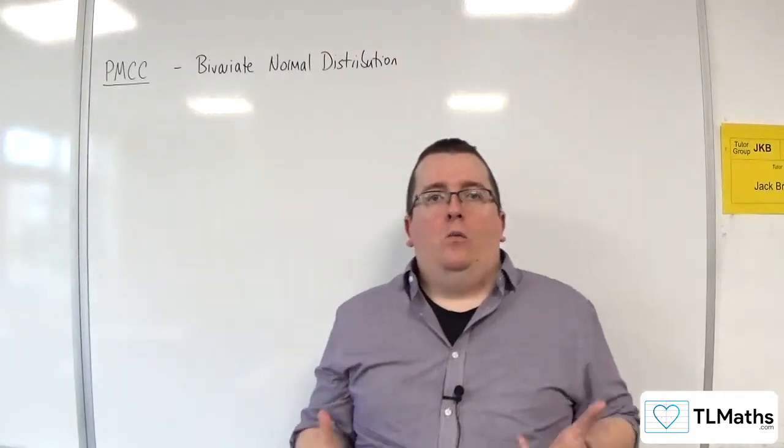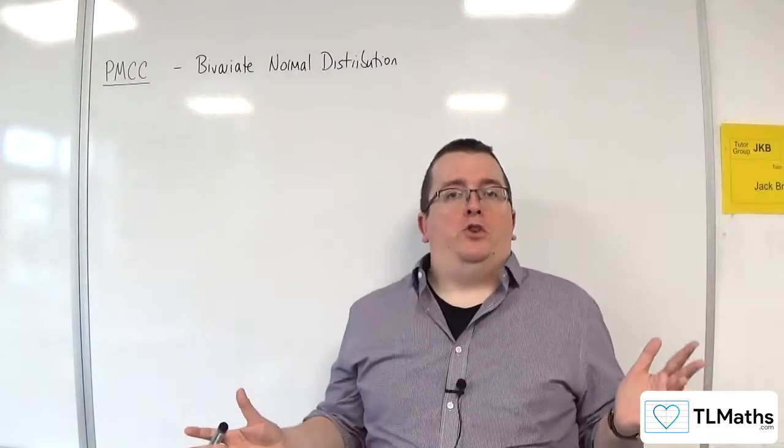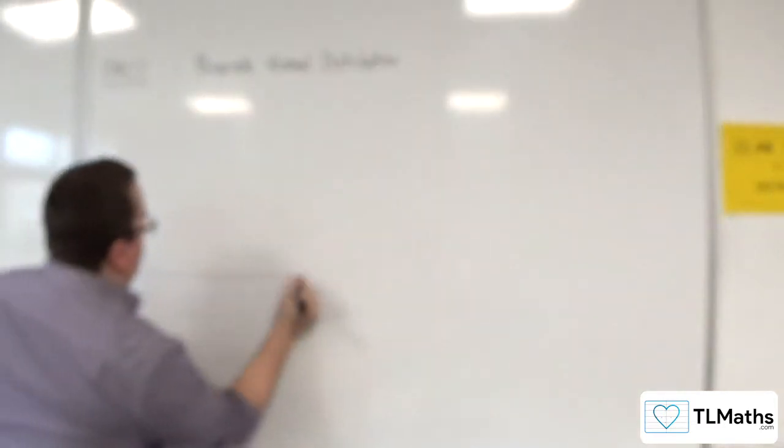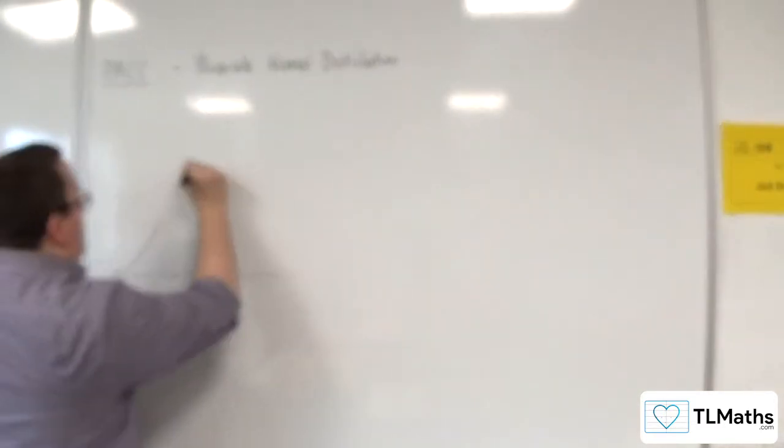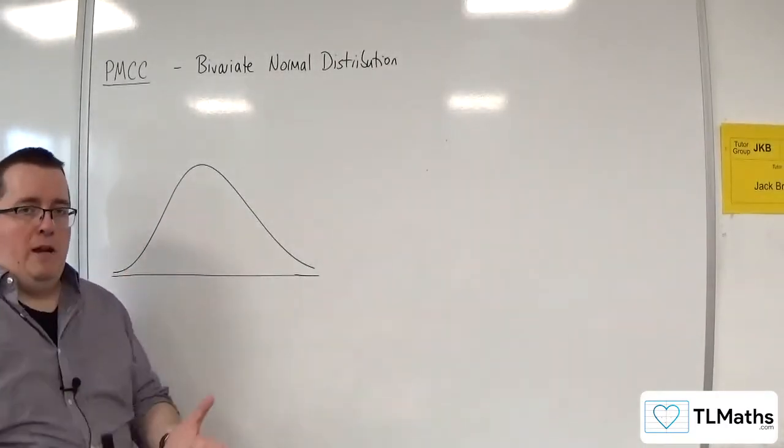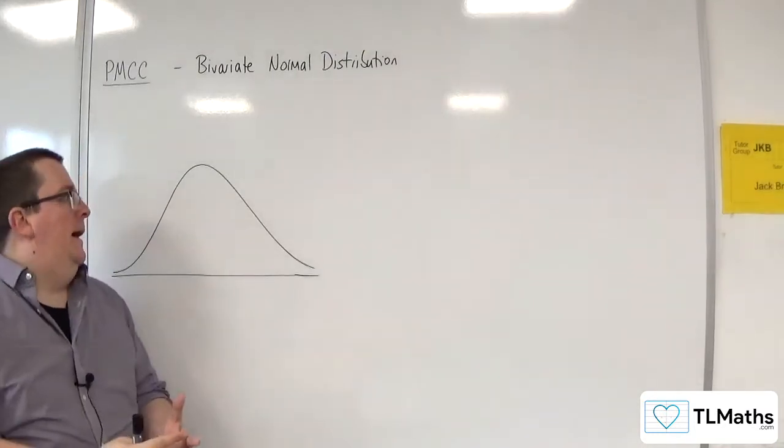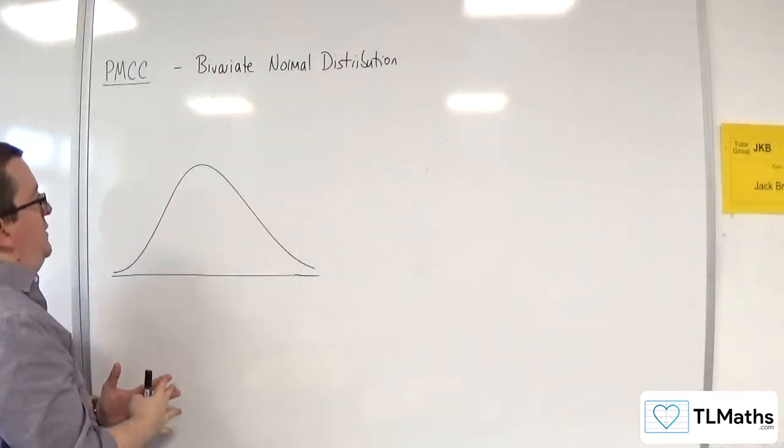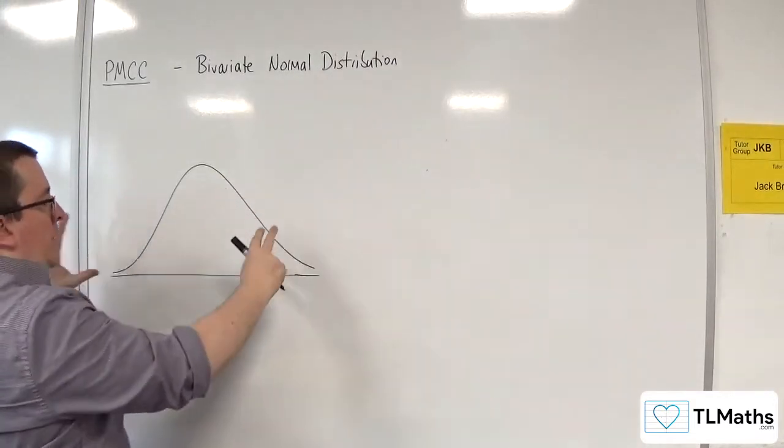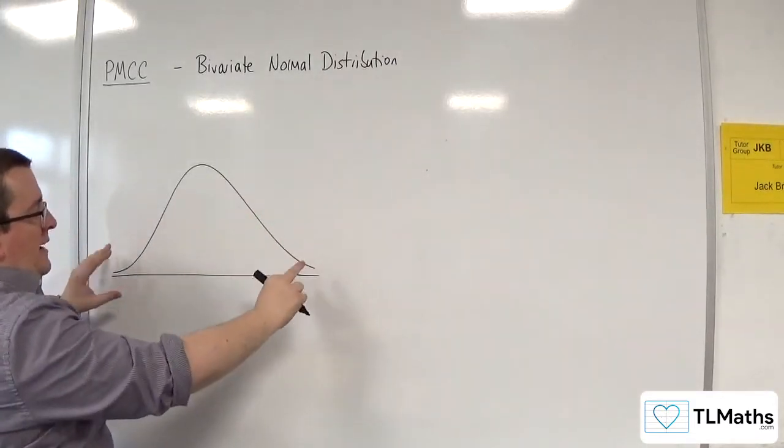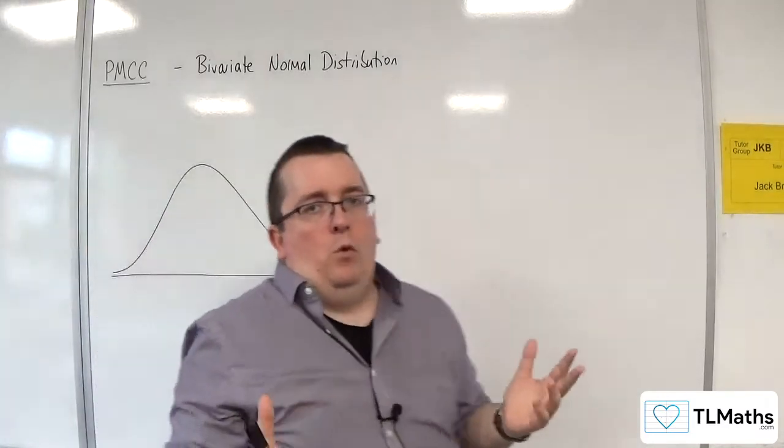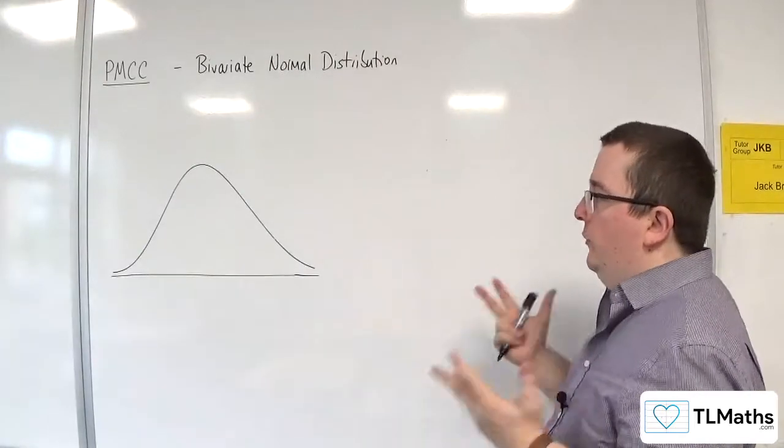So very briefly, what is a normal distribution? A normal distribution, you may have heard of the bell curve. Normal distribution looks something like this. It is a symmetrical curve and is essentially identifying that the majority of the data is in the middle, whereas less of the data is in either of its end tails. That's essentially what the normal distribution is describing.